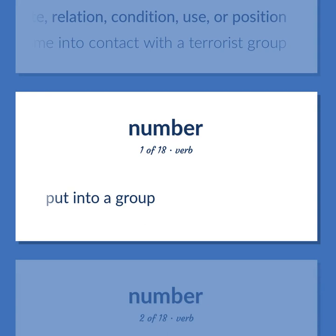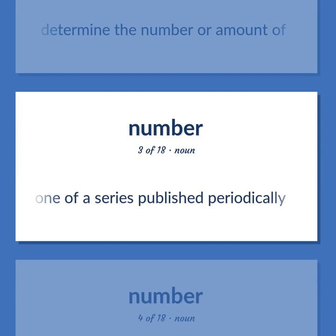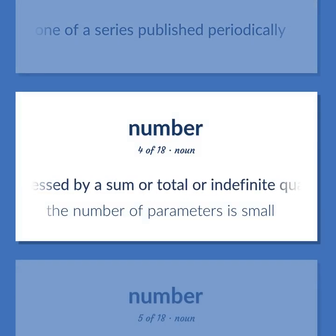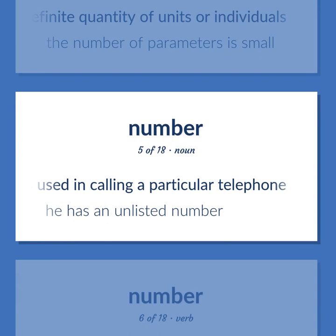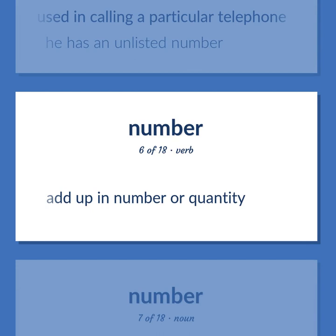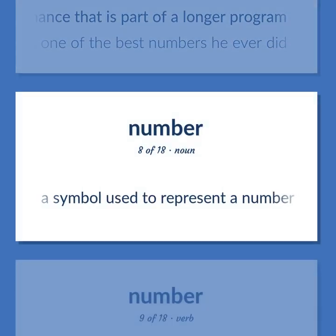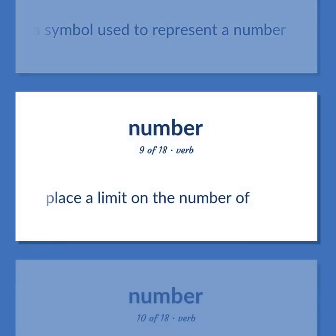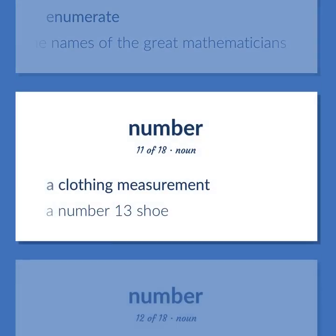Number: To put into a group. To determine the number or amount of. One of a series published periodically. The property possessed by a sum or total or indefinite quantity of units or individuals — the number of parameters is small. The number is used in calling a particular telephone — he has an unlisted number. To add up in number or quantity. A short performance that is part of a longer program — it was one of the best numbers he ever did. A symbol used to represent a number. To place a limit on the number of. A clothing measurement — a number 13 shoe.